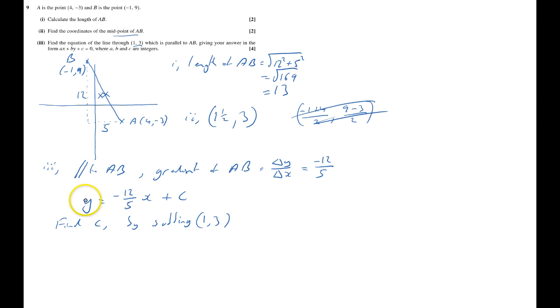So (1, 3). I know I often mess up when I'm going to substitute these things, so the first one's the x and the second one's y. I always write that down. So y, that's 3, equals -12/5 times x, which is 1, plus c. And so that will give me 3 = -12/5 + c. So c = 3 + 2 and 2/5, so that's 5 and 2/5. And so that will give me y = -12/5 x + 5 and 2/5.